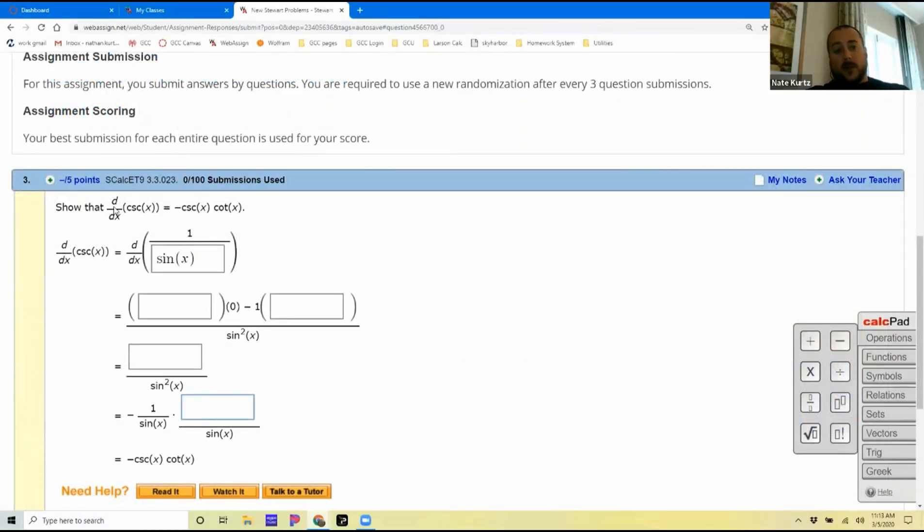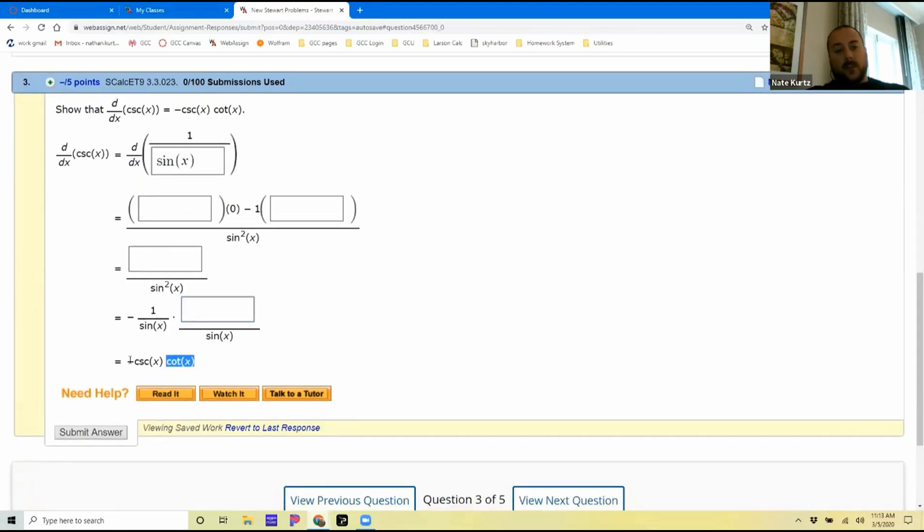In my calculus class, I would just say what is the derivative of cosecant of x, and this is all the work that the students would do on paper. Previously, just this last line is what would be graded in the website. Now, rather than the last line, I'm actually telling them what the answer is.